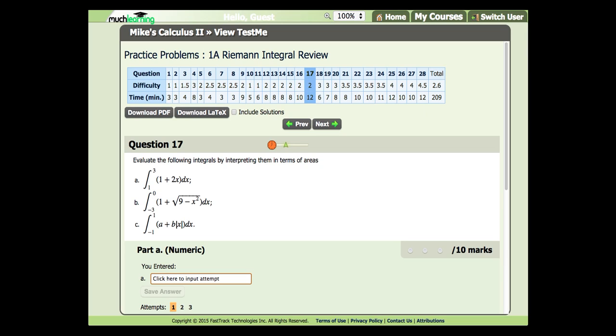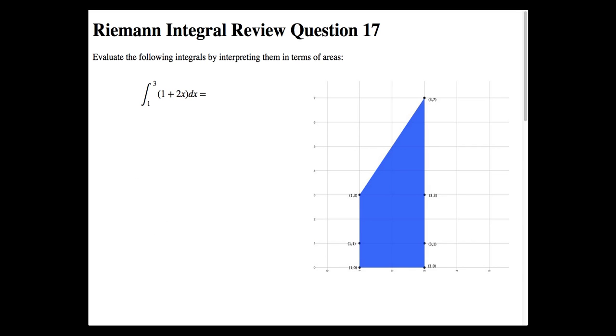Now that you had a moment to try it out, let's start with part A. The first integral can be interpreted as the area of the function 1 plus 2x. If we were to graph this, we would get a trapezoid with the width of 2 and the height steadily increasing from 3 to 7.